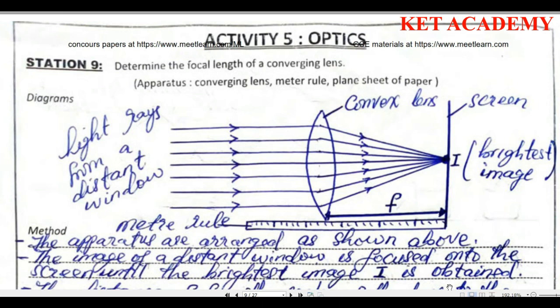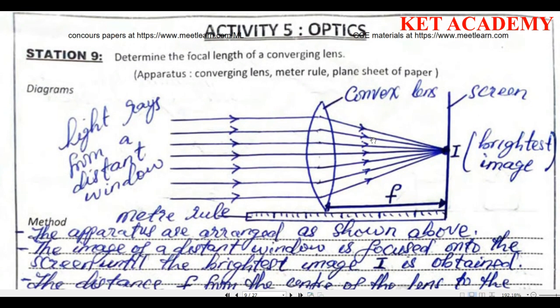In this experiment, our requirements are simply a converging lens, a metal ruler, and a plain sheet of paper. Here is how our diagram should look: light rays from a distant window come in from one end, then we have our converging lens, and then our screen.